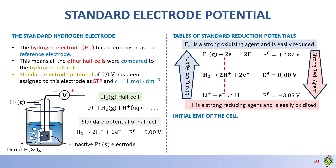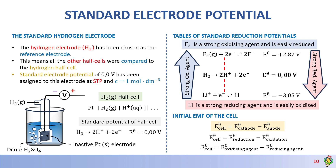For galvanic reactions, we can calculate the initial EMF of the cell using these equations. E°cell = E°cathode − E°anode. We can also write this as E°cell = E°(reduction) − E°(oxidation), since RED CAT means cathode equals reduction, and AN OX means anode equals oxidation. Alternatively, E°cell = E°(oxidizing agent) − E°(reducing agent), because the substance undergoing reduction is the oxidizing agent and the substance undergoing oxidation is the reducing agent.